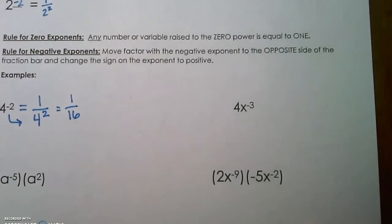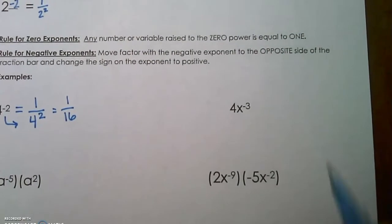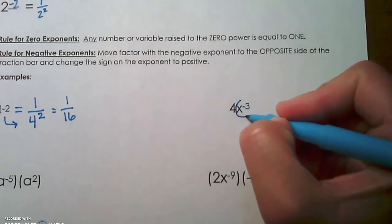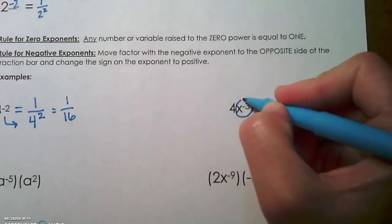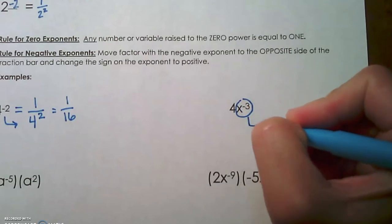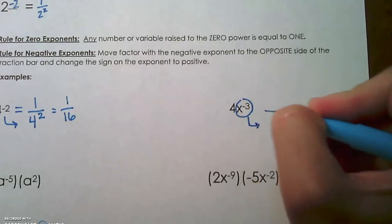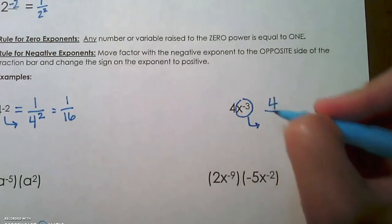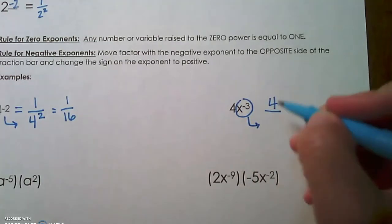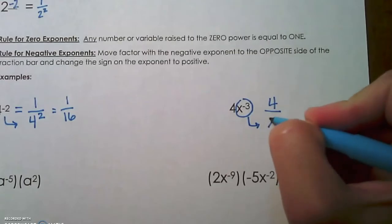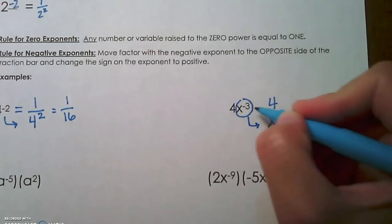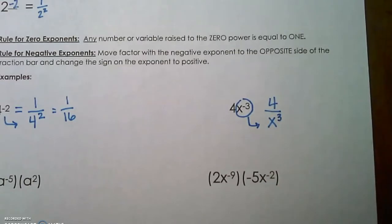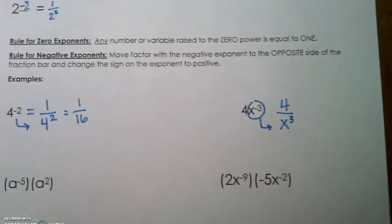4x to the negative 3 — the only thing that has the negative exponent on it is x. So x is going to move to the other side of the fraction bar. 4 is going to stay. And that 3 becomes positive when we move it to the other side of the fraction bar.